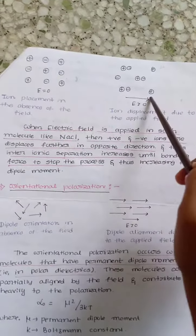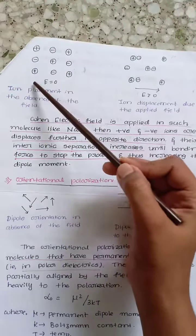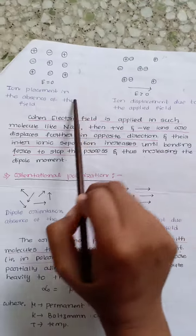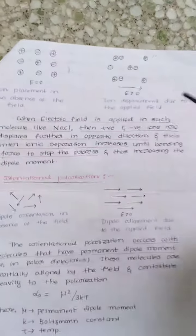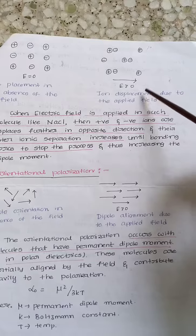Second one is ionic polarization. This is the diagram for ionic polarization, showing ion placement in the absence of electric field. In the presence of electric field, what happens?